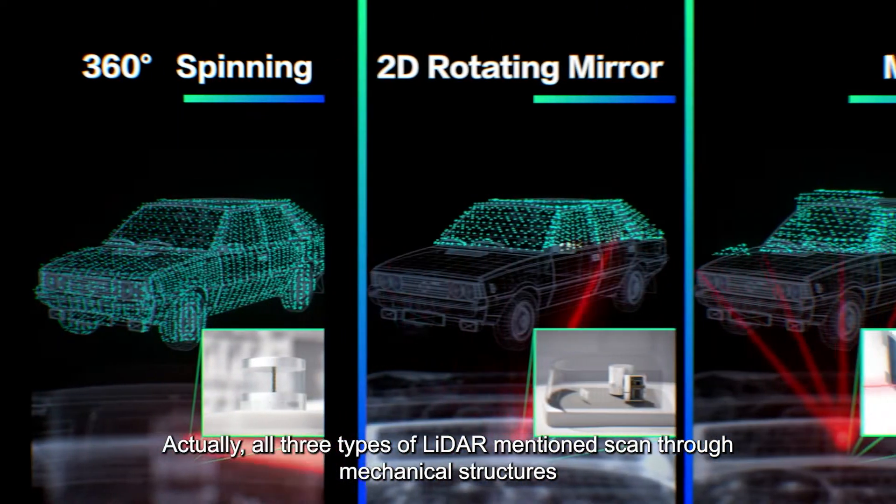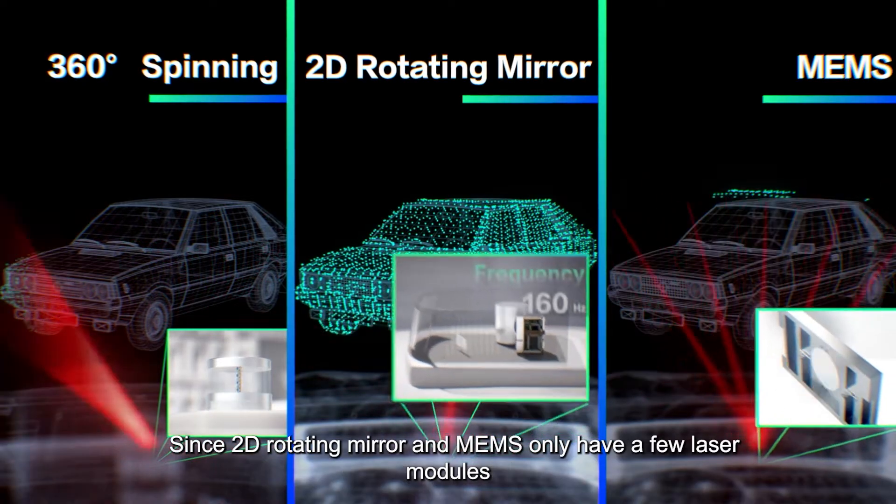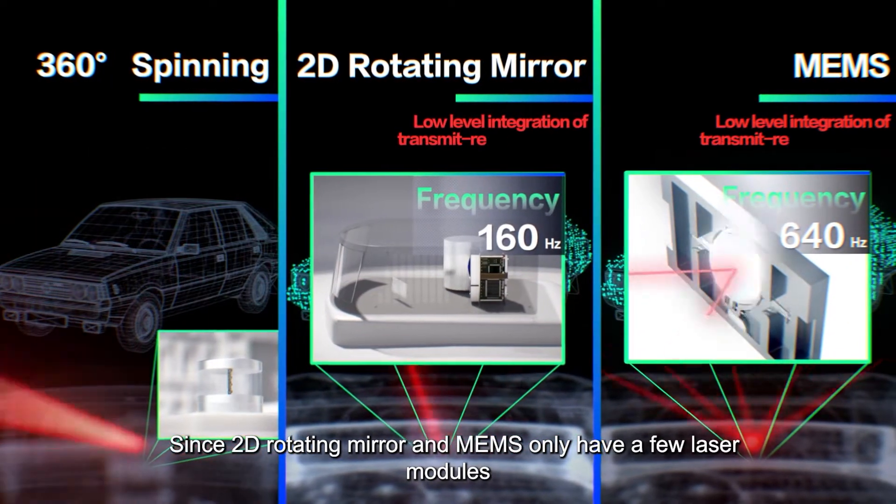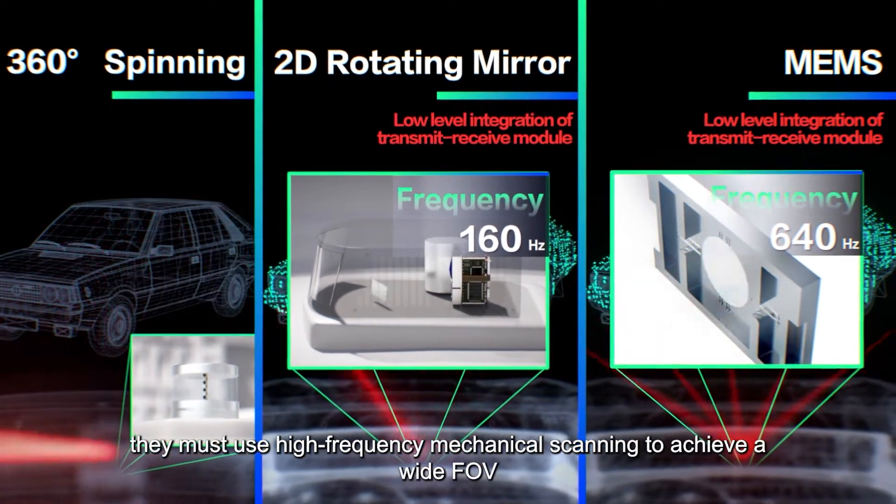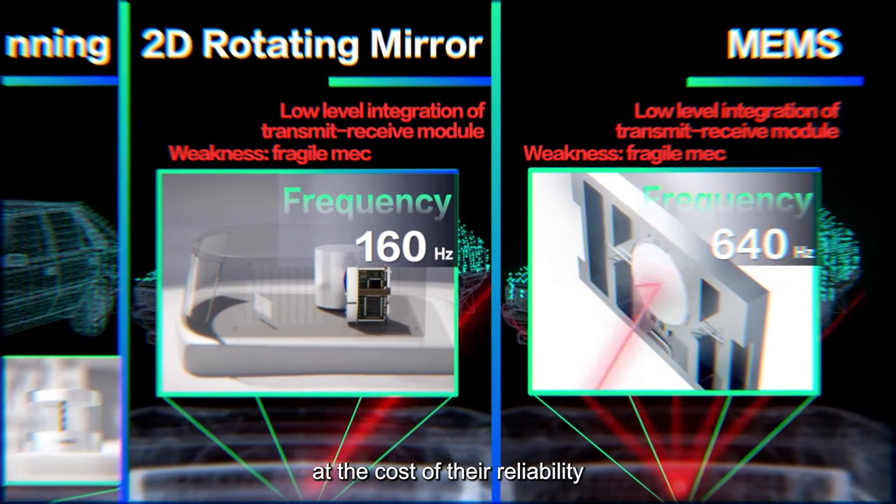Actually, all three types of LiDAR mentioned scan through mechanical structures. Since 2D rotating mirror and MEMS only have a few laser modules, they must use high frequency mechanical scanning to achieve a wide FOV, at the cost of their reliability.